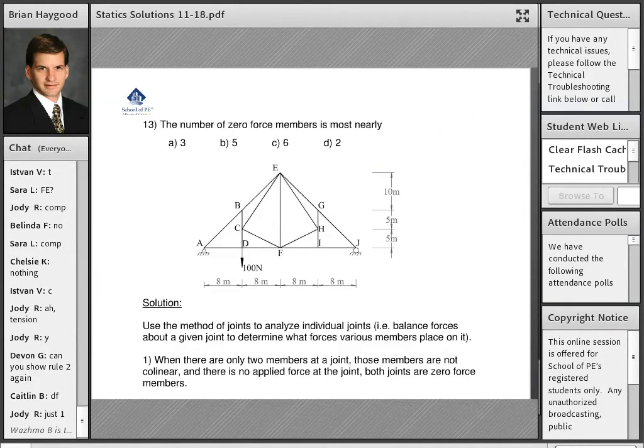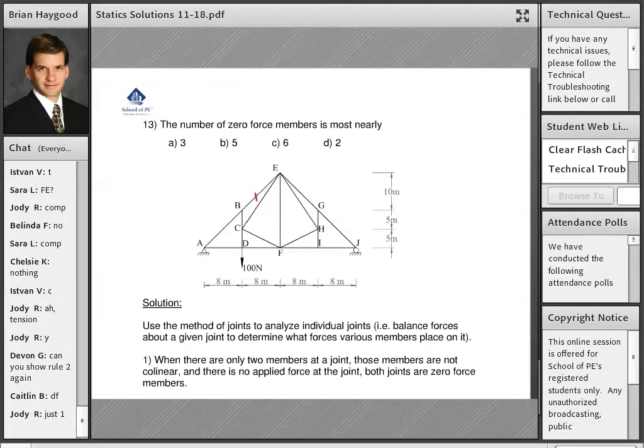So we're trying to find DF, and let's include the possibility of finding BE. What if the answer choices were different and we needed to do that? So maybe we want to find both of these forces. So we'd cut both of them.